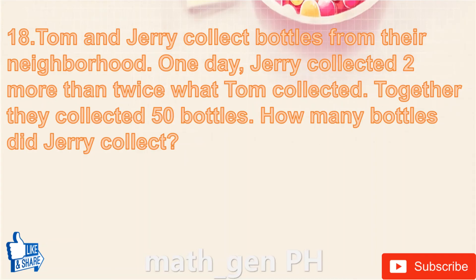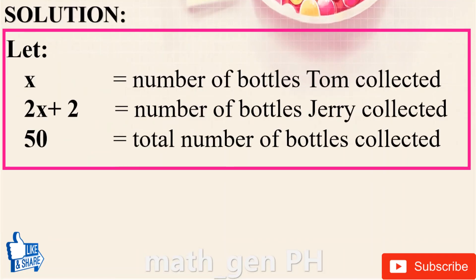Question number 18: Tom and Jerry collect bottles from their neighborhood. One day, Jerry collected two more than twice what Tom collected. Together they collected 50 bottles. How many bottles did Jerry collect? Let x equal Tom's bottles and 2x plus 2 equal Jerry's bottles. Setting up: x plus 2x plus 2 equals 50, so 3x plus 2 equals 50.